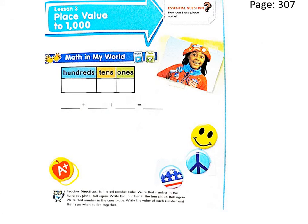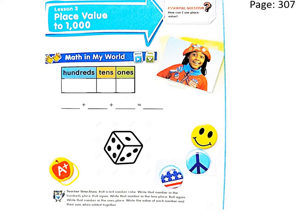Please open your book to page number 307. We have an activity here. Use a dice cube for this activity. Roll the dice and write that number in the hundreds place. Roll again and write that number in the tens place. Roll again and write the number in the ones place. Then write the value of each digit and find the sum. It's fun — try it!